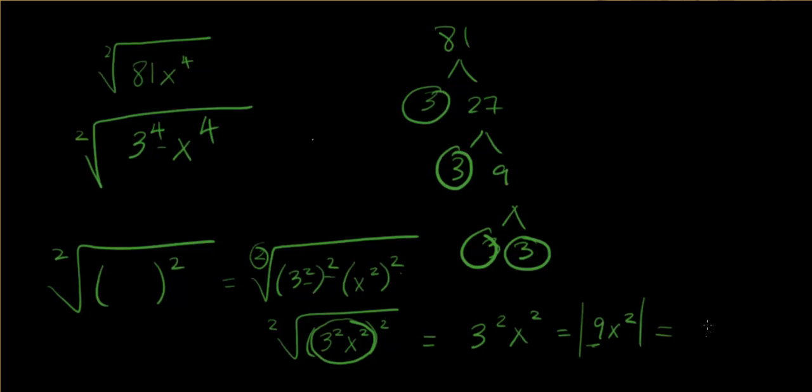But it's to the 2nd, so we have to put an absolute value. But 9 is 9 no matter what. x to the square, whatever you multiply by itself, it's going to be a positive. So I don't need that absolute value. It's redundant. I get 9x to the 2nd.